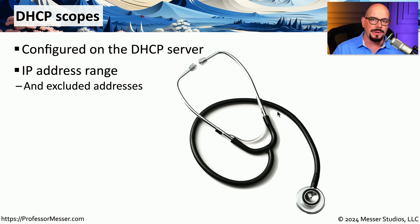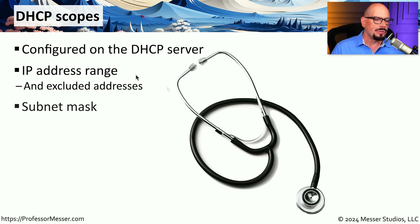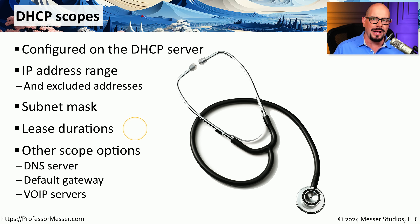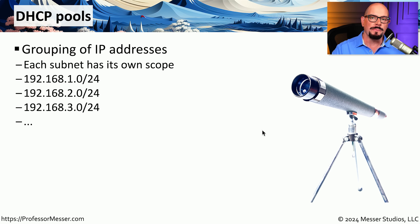The DHCP scope might include all of the IP addresses available for devices on this network, as well as excluded addresses that might be used for other devices on the network that should not be given out as an IP address. For example, you might have switches or routers with static IP addresses — we don't want to assign those to another device, creating a conflict. We also configure the subnet mask, lease durations, and any other options important for IP configuration, such as a DNS server, default gateway, voice over IP server addresses, and other details. Inside that DHCP scope are pools of IP addresses that the DHCP server will choose from to automatically assign IP addresses to other devices.